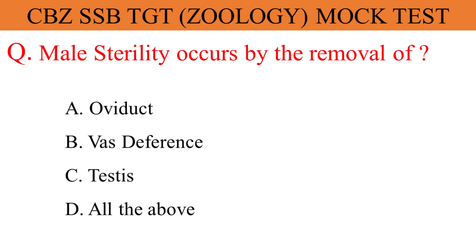Male sterility occurs by the removal of? The given options are A. Oviduct, B. Vas deferens, C. Testis, D. All the above. And the correct answer is option B. Vas deferens.